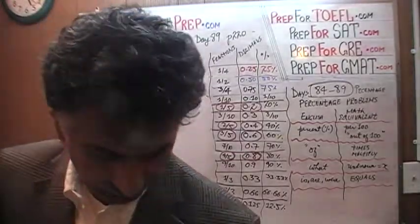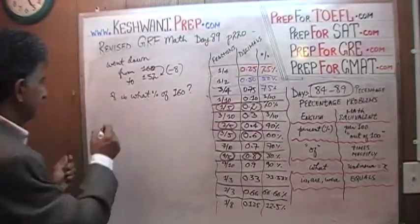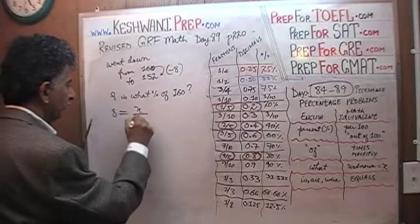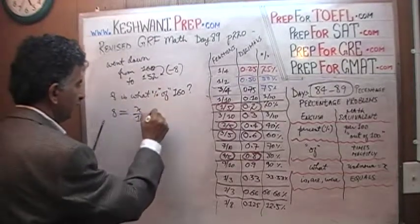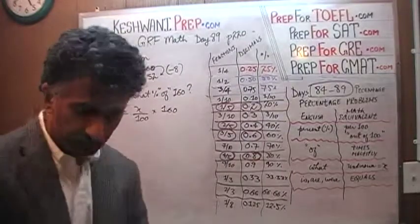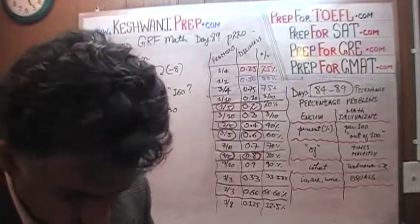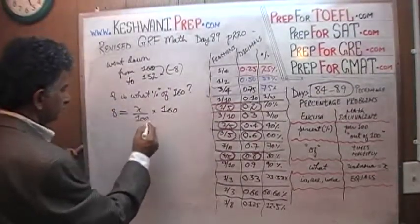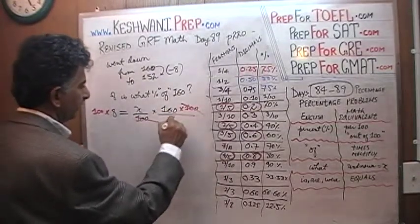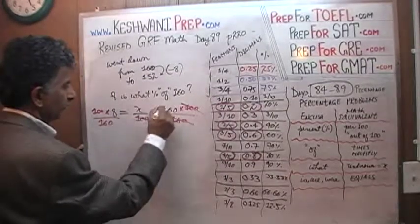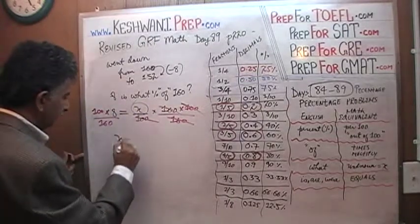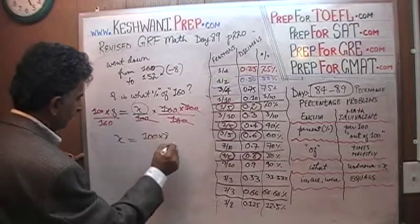Here is our chart — we are going to follow this. 8 is — 'is' means equal. What — 'what' means the unknown. Percent means over 100. Of means times 160. That's it — then we just have to solve for x. Multiply both sides by 100 — that will get rid of this 100. Divide both sides by 160 — that will get rid of this 160. So x is equal to 100 times 8 over 160.